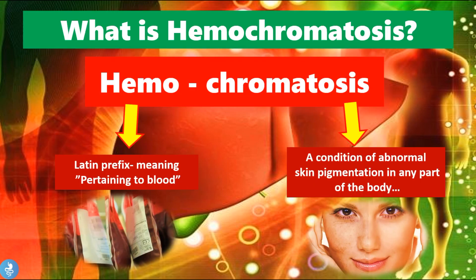So what is hemochromatosis? If we take a closer look at the word, we see that it can be broken down into two main parts: the word 'hemo' which means pertaining to blood, and the word 'chromatosis' which is a condition of abnormal skin pigmentation in any part of the body. So the word hemochromatosis tells us two main points — that the disease affects the blood in some way and it also causes an abnormal skin pigmentation in the body.